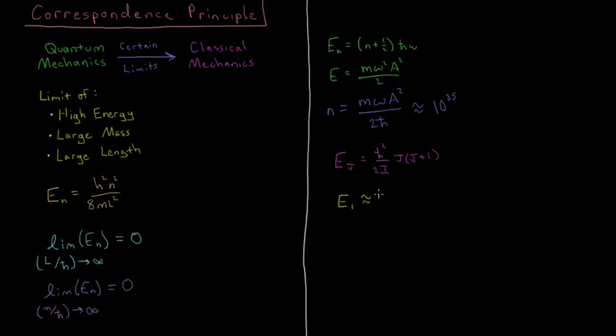Then for h-bar squared, you're going to get about 10 to the minus 70 or so joules. So obviously relative to any kind of macroscopic quantity, you would never be able to measure 10 to the minus 70 joules.